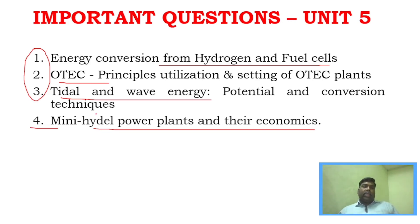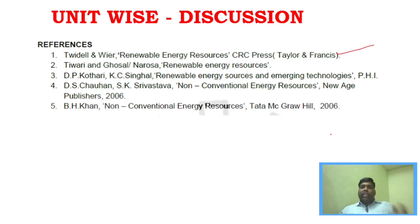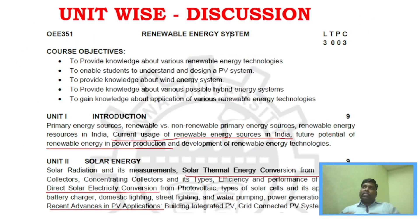This covers the important questions for Renewable Energy System subject under 2021 regulation. For Part A, since there are no previous year question papers, focus on three to four questions per unit. If you have choice in questions, you can confirm four to five answers. For Unit 1, current issues and recent developments are more than enough, but understand what renewable energy is and what the primary energy sources for non-renewables are.